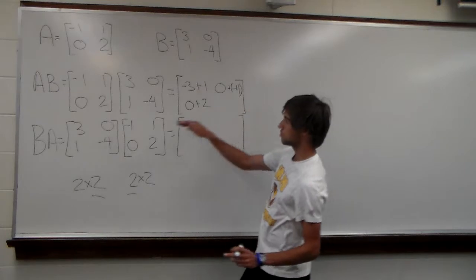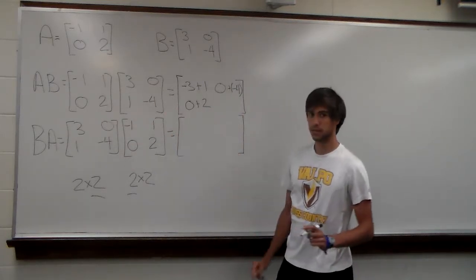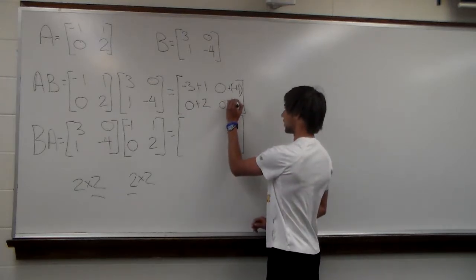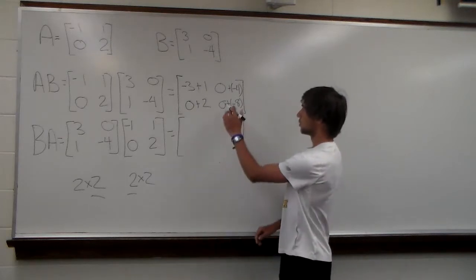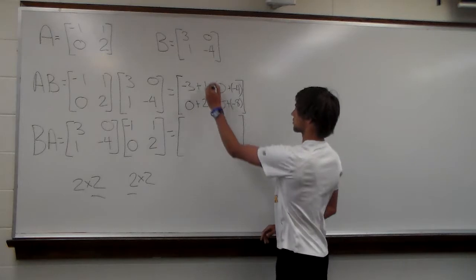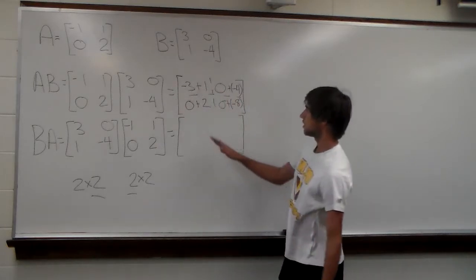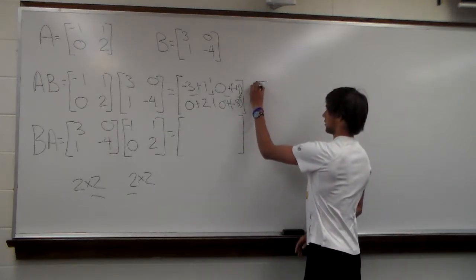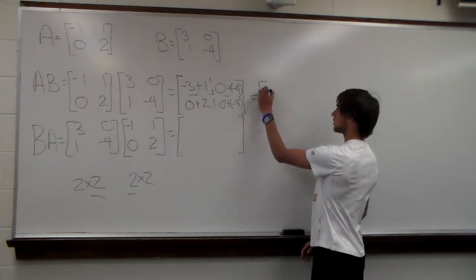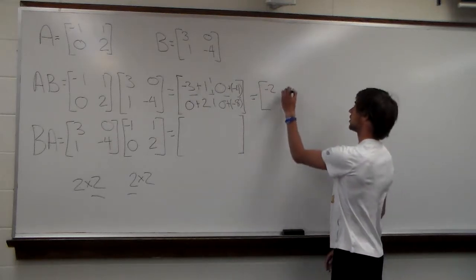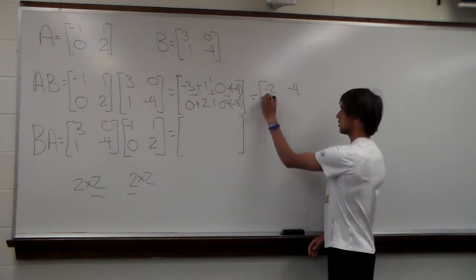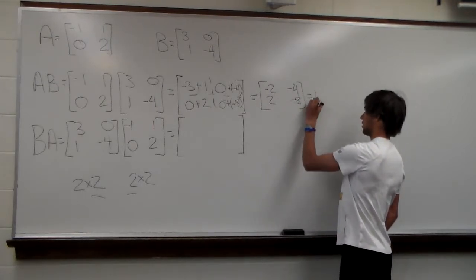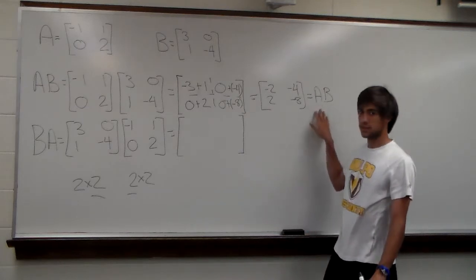Finally, for row 2, column 2, we take row 2 times column 2: 0 times 0 is 0, plus 2 times negative 4 is negative 8. Adding all the individual entries together gives us: negative 3 plus 1 is negative 2; 0 plus negative 4 is negative 4; 0 plus 2 is 2; and 0 plus negative 8 is negative 8. This is our result for A times B.